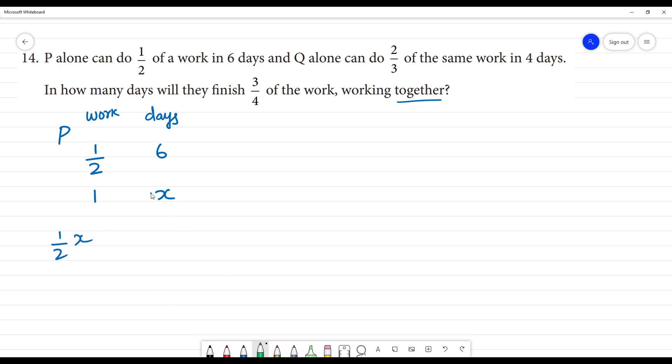Above P can do half of the work in 6 days and one complete work, that is half into X is equal to, cross multiply. Half into X is equal to 6, so X is equal to 12 days. P alone can do the work in 12 days.